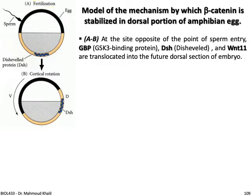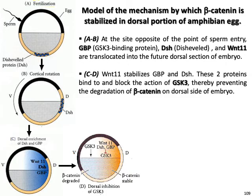Starting from the site opposite to the point of sperm entry, three kinds of proteins are translocated into the future dorsal section of the embryo. As shown in figures A and B, the proteins Dishevelled, GSK, and Wnt11 are translocated to the dorsal site after sperm entry.